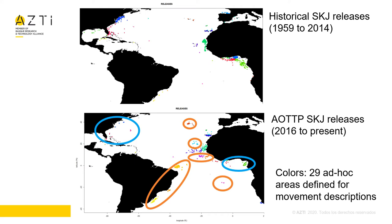You also notice different colors in the tagging locations. These colors correspond to 29 different areas that were defined according to the respective tagging and recovery locations, but also the period and conditions of tagging. These areas will be used to describe the movement patterns of tunas.